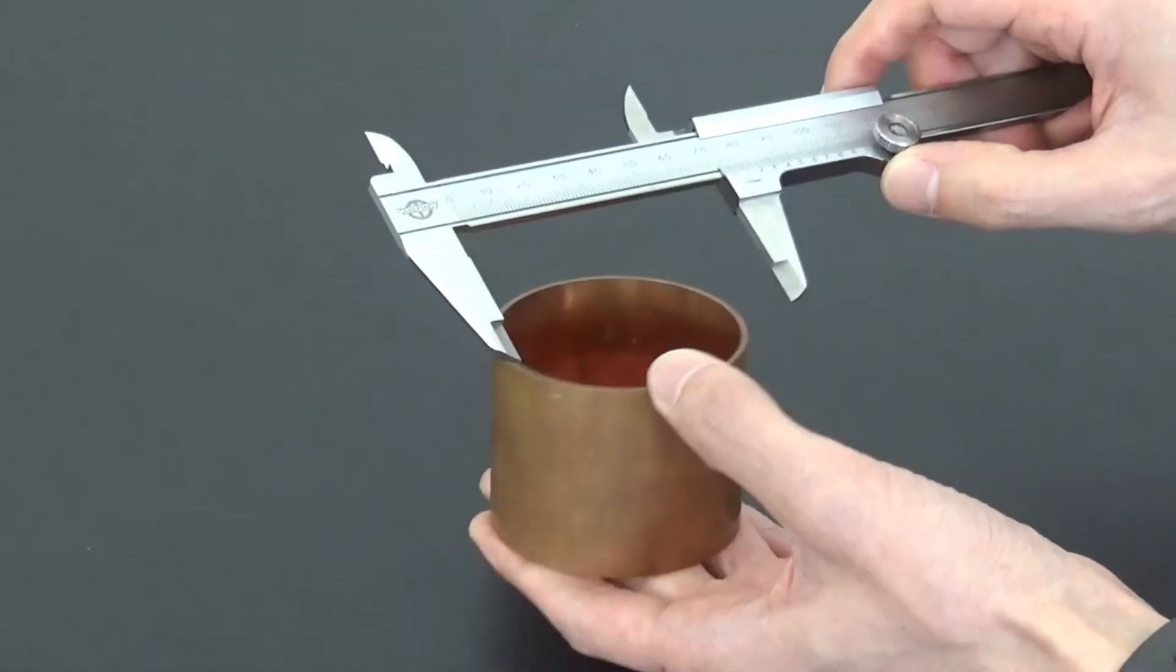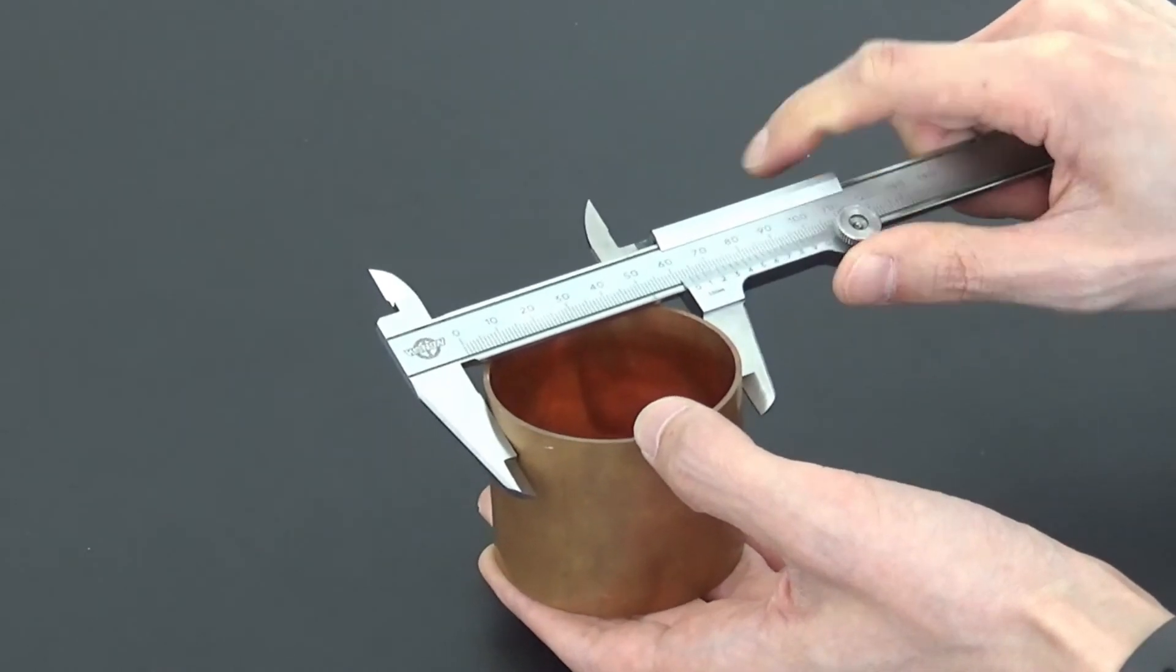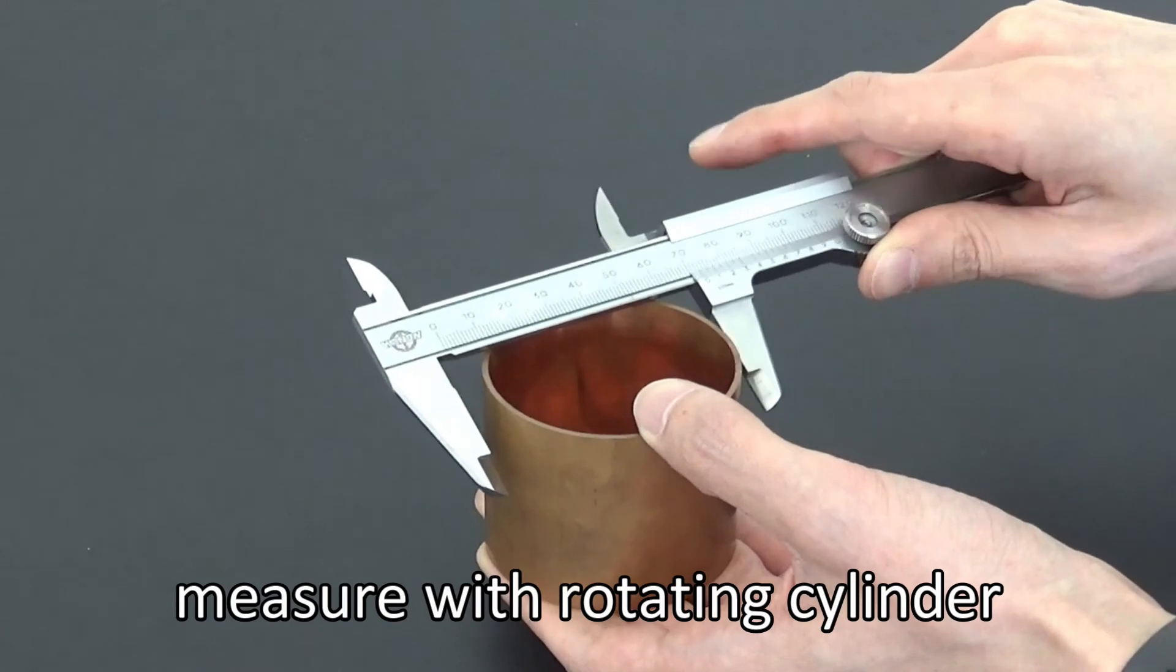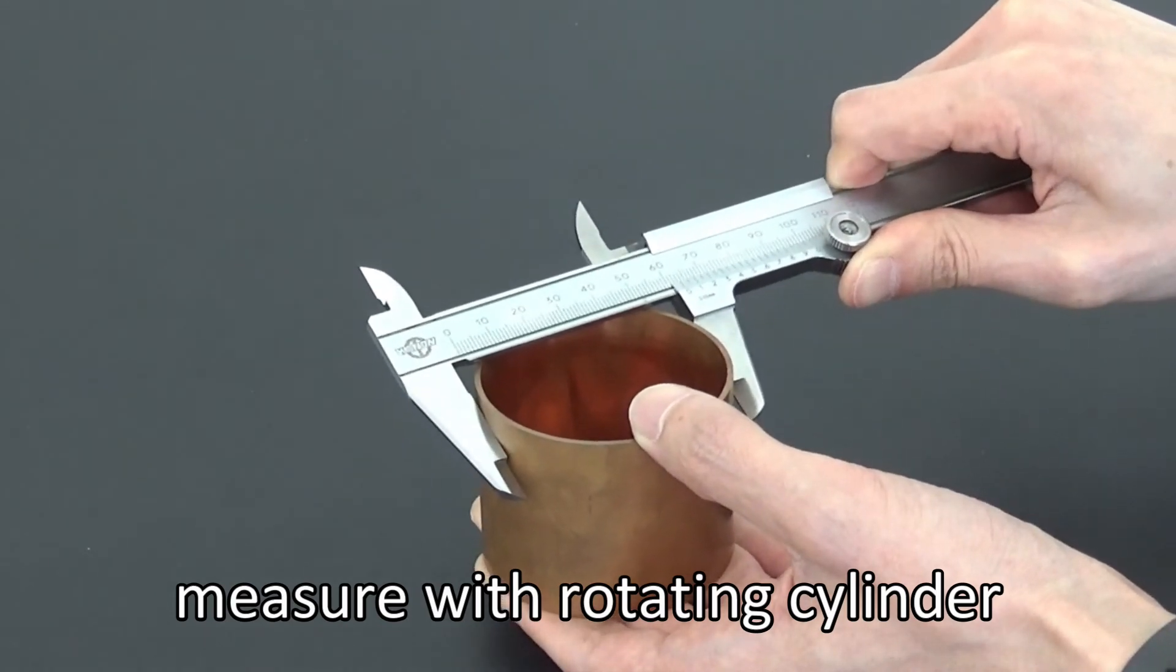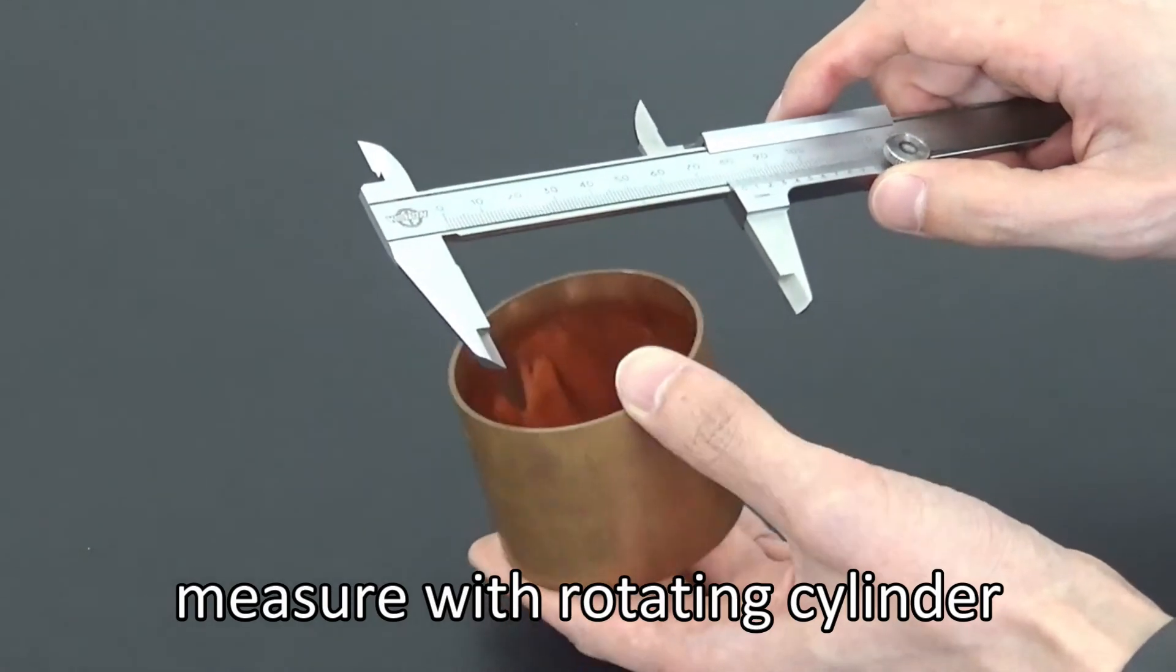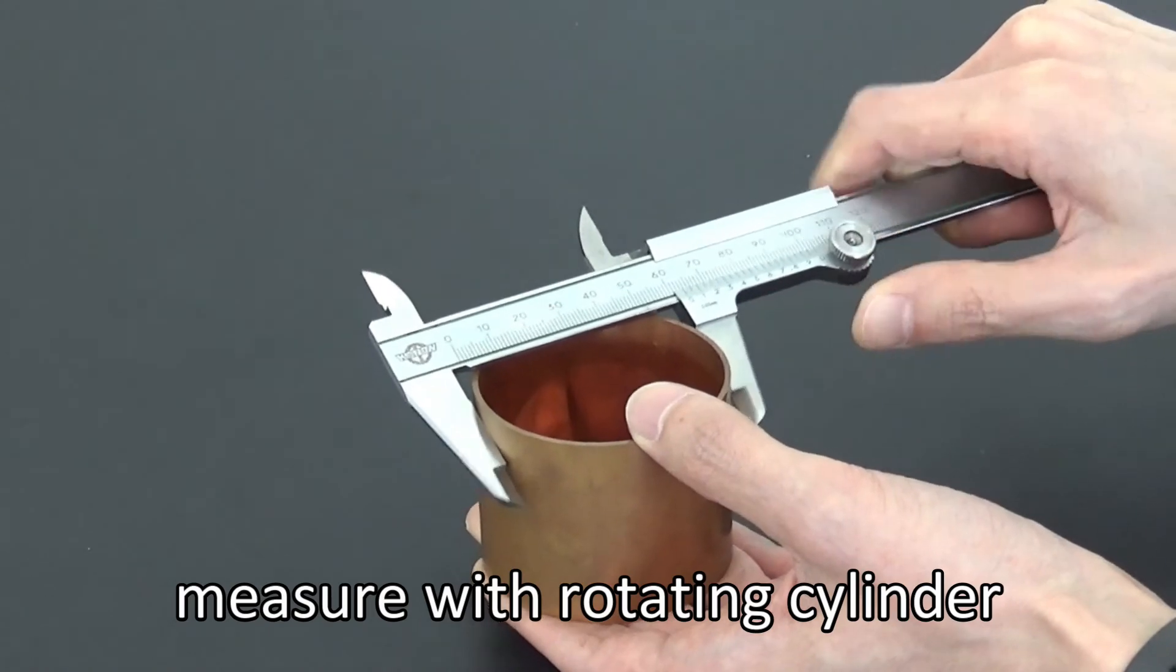Therefore, the measurement value may vary depending on where you place the caliper. In order to average out such effects in the measurement, once you have taken the measurement, rotate the cylinder slightly, and then measure the diameter of a different part the next time. Repeat this process to measure the circumference of the cylinder evenly.